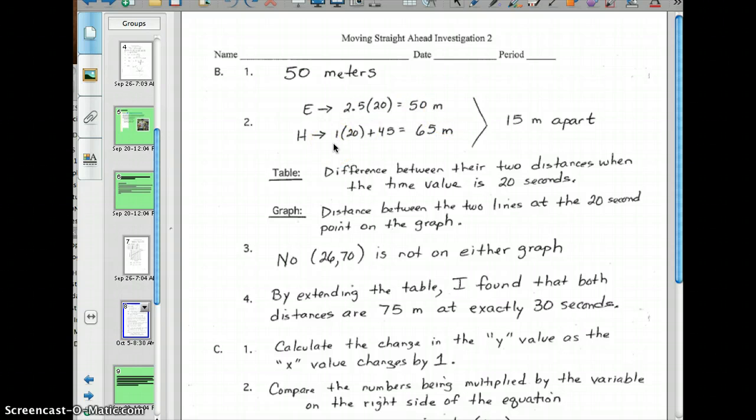Henry, on the other hand, question B2 asks us, after 20 seconds, how far apart are the brothers? So we need to figure out where Henry is. We know Emil's at 50. Henry, if we take 20 and multiply it by 1, we get 20. And then add 45 to that, which is his head start, we get 65. So the two brothers are going to be 15 meters apart.